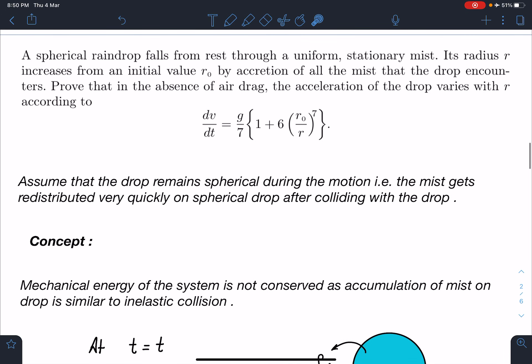Here is the statement of this magical problem. A spherical raindrop falls from rest through a uniform stationary mist. Its radius r increases from an initial value r_not by accretion of all the mist that the drop encounters. Prove that in absence of air drag, the acceleration of the drop varies with r according to: a = (g/7)[1 + 6(r_not/r)^7].